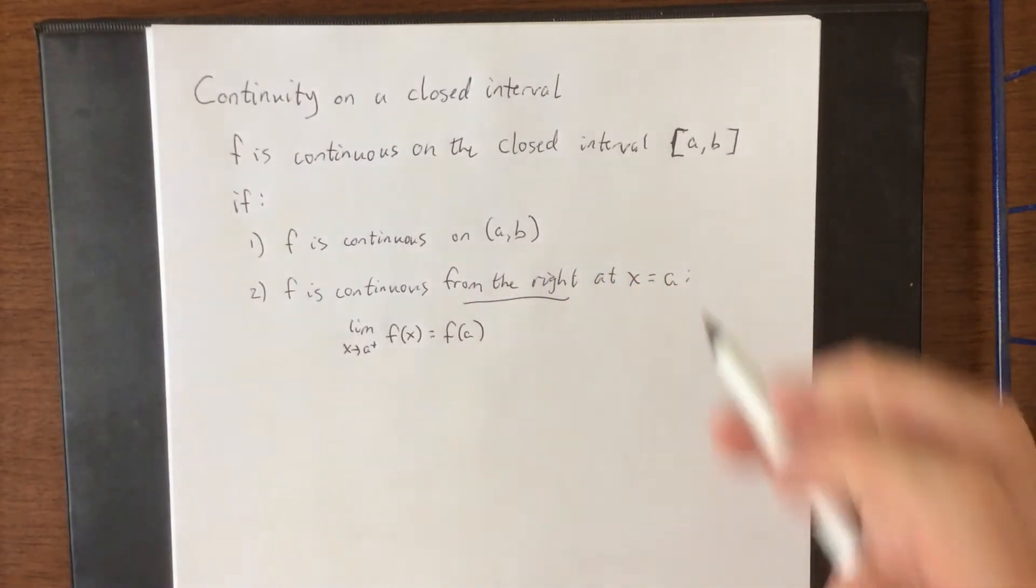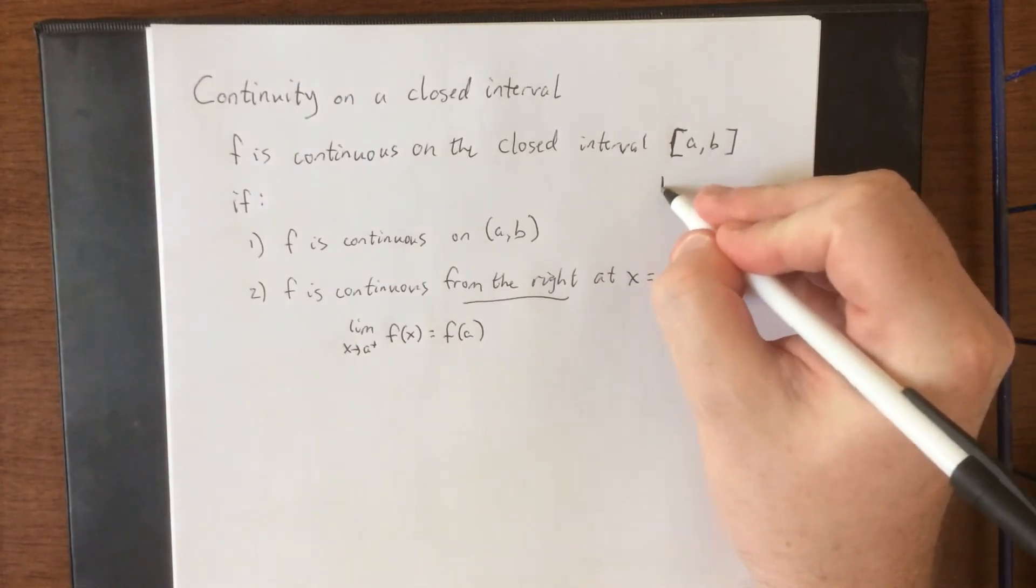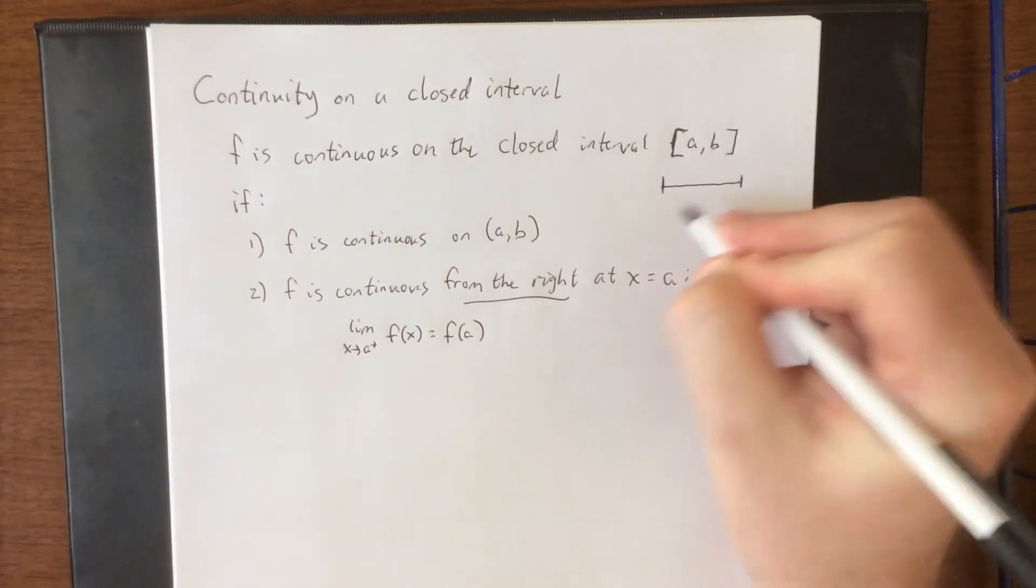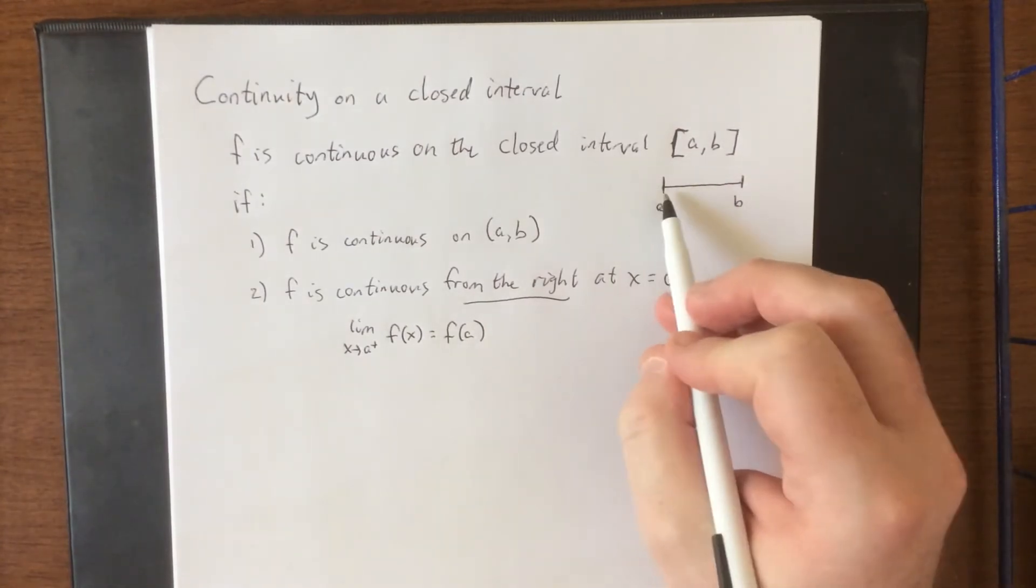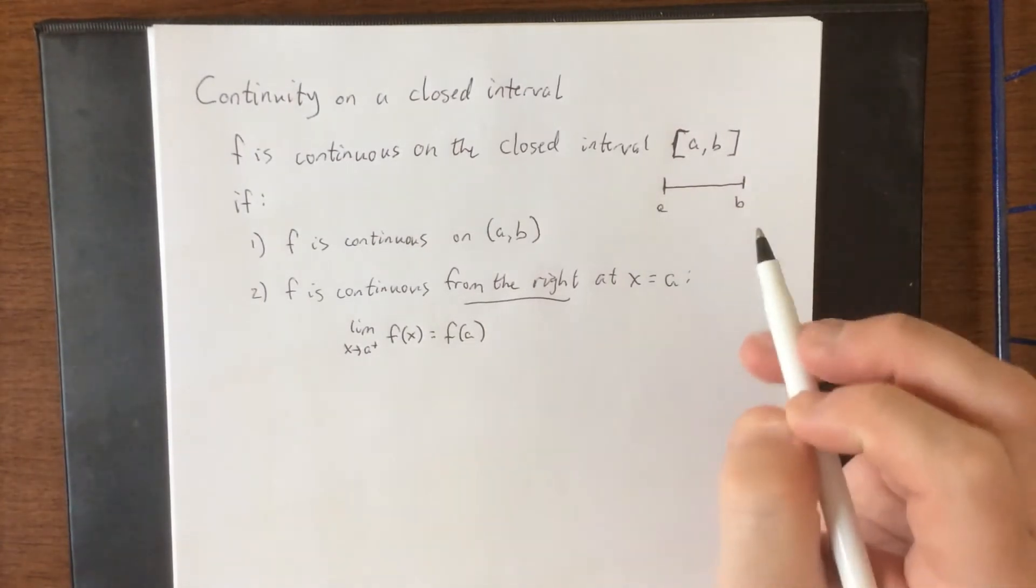We do this because when we consider the closed interval from a to b, if the function is only defined on the right side of a, then we shouldn't worry about it having to be continuous from the left hand side.